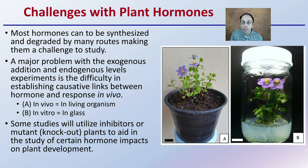Some studies utilize inhibitors or mutants called knockouts, where a gene is knocked out to prevent the plant from making a particular hormone — asking how that would impact the plant. This aids in studying certain hormones' impacts on plant development. This has been a general overview of plant hormones, illustrating why they are so hard to study, simply because of all the interactive effects that might occur.